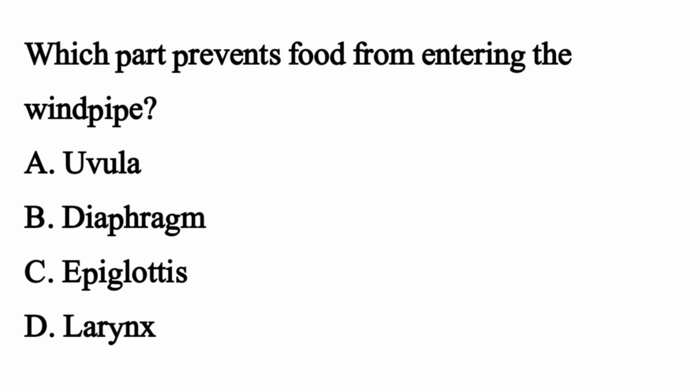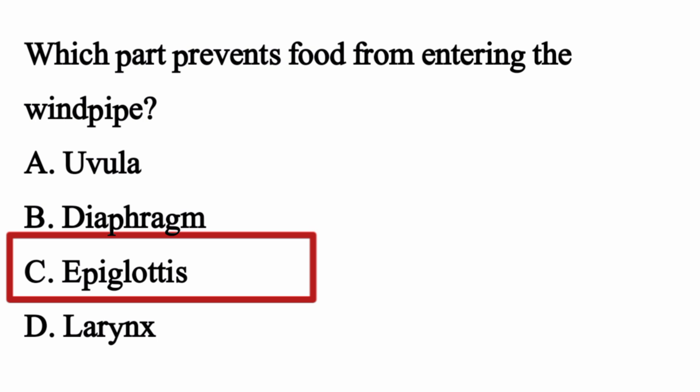Which part prevents food from entering the windpipe? The right option is Option C: Epiglottis.